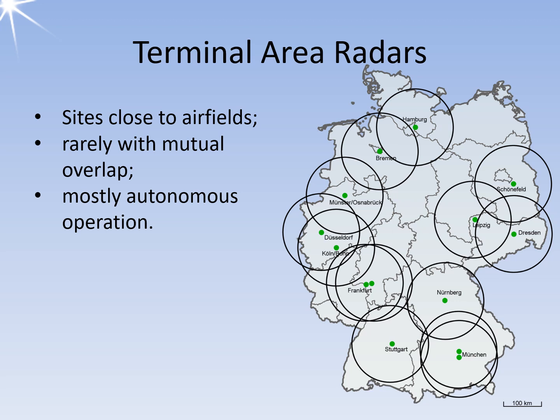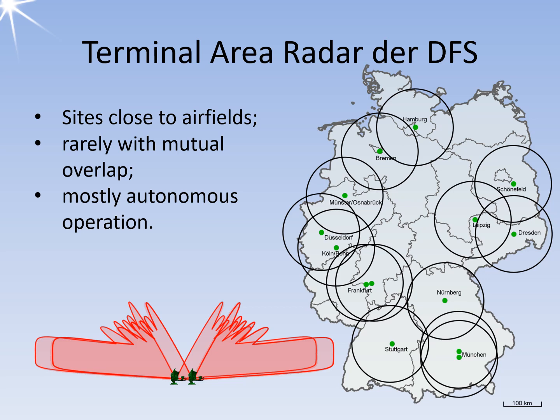This duplication also serves another function at the extremely large airports of Frankfurt and Munich. Because the trailing edge of the antenna pattern has an angle of about 30 to 35 degrees, a so-called cone of silence arises exactly above the antenna, within which the radar cannot locate anything. The radius of the cone of silence is about two times the aircraft's altitude. This means that an aircraft at 10,000 feet, equivalent to about 3,000 meters, can only be located from a minimum distance of 6 kilometers. To close this gap, two terminal area radars can be deployed at this distance to cover each other's cone of silence. However, such a doubling also doubles the costs, which is why this measure is only worthwhile at very large airports.